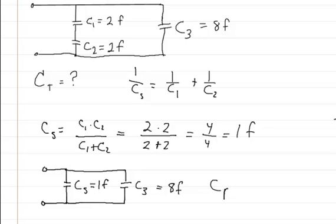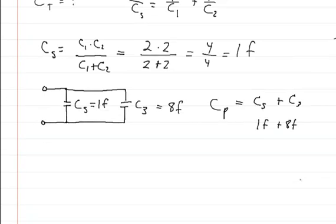So if we get the total capacitance in parallel we're going to get CS plus C3. CS or the capacitance in series that's equal to 1 farad plus 8 farads from C3. And so the total capacitance in parallel is going to be equal to 9 farads.